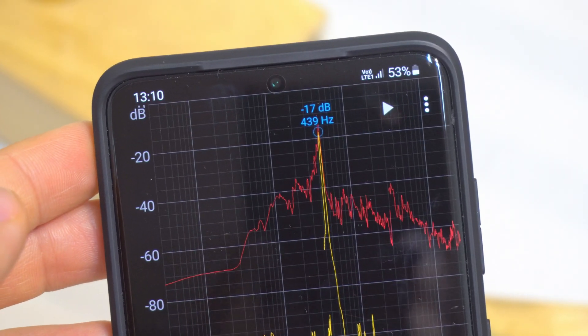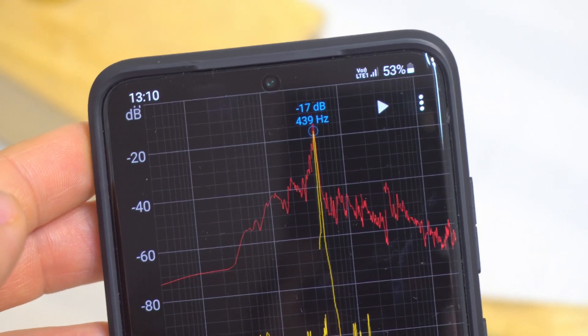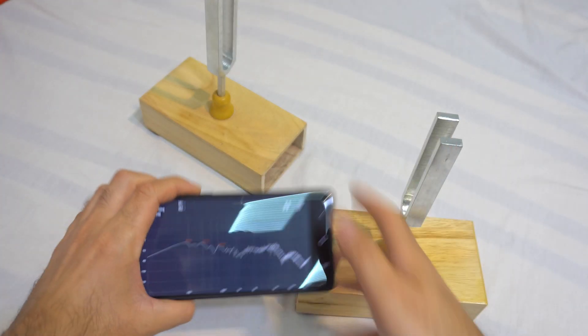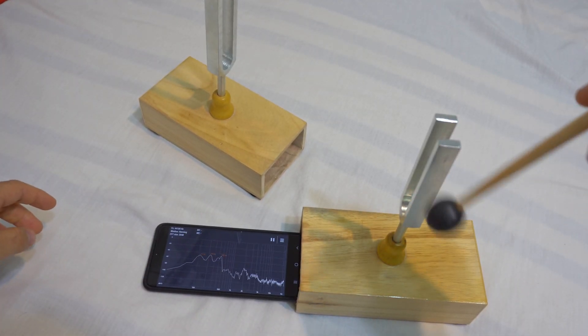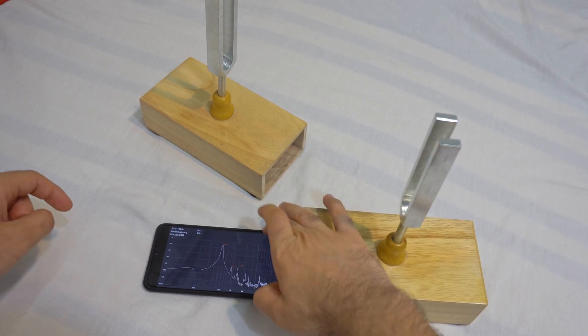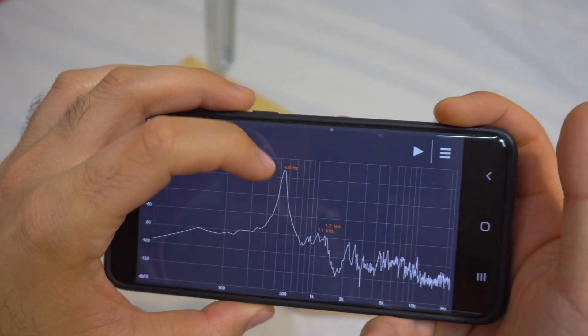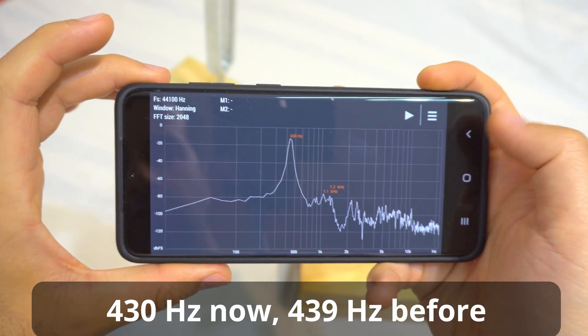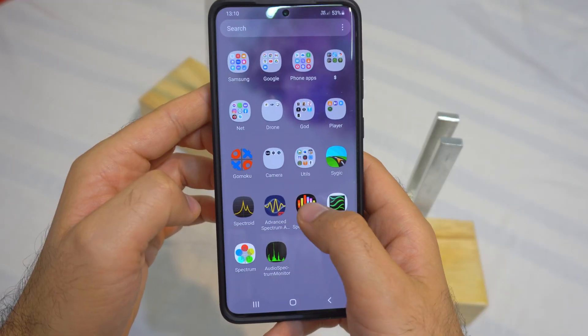If I use a different application it will tell a slightly different frequency. Let's try another one. This looks like this. Insert it there. I just paused it. This one says 430 Hz. So they are not totally equal. Let's try a third one.